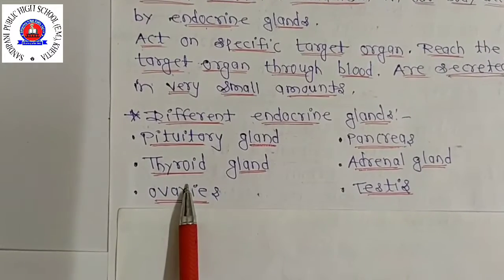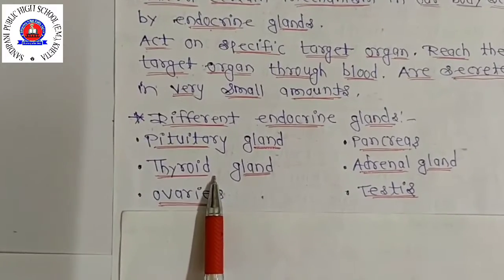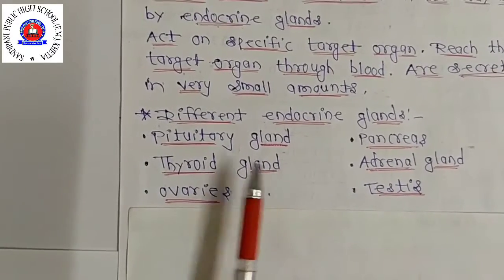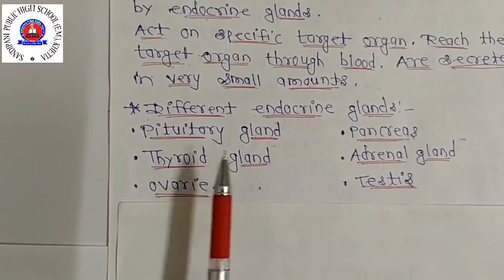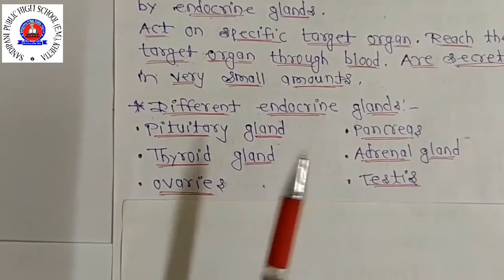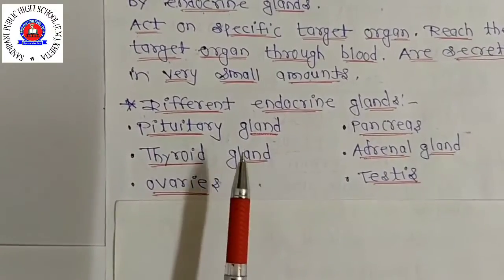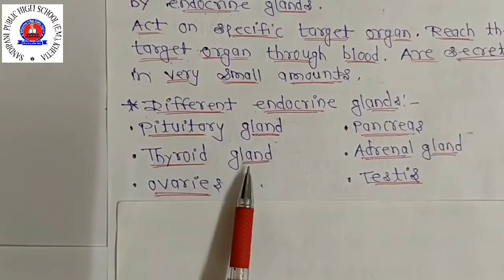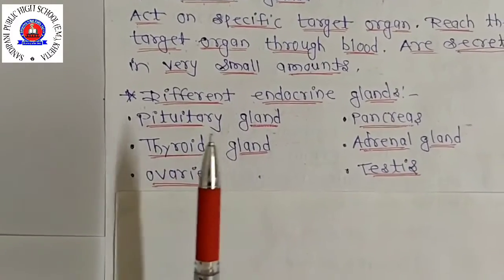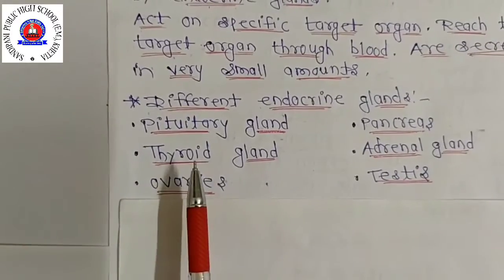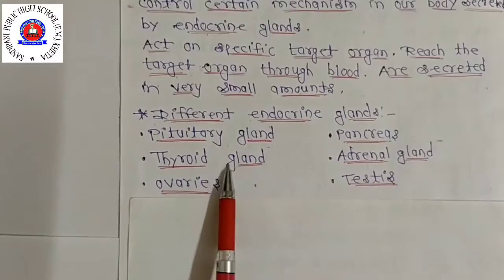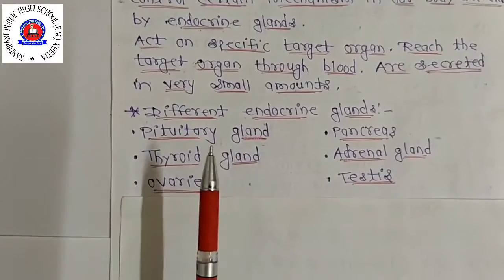The thyroid gland makes a hormone called thyroxine, which contains iodine. The function of thyroxine hormone is to control the rate of metabolism of carbohydrates, fats, and proteins in our body. Iodine is a necessary mineral for making thyroxine hormone, so a deficiency of iodine in the diet can cause a deficiency of thyroxine hormone in the body, producing less thyroxine and causing a disease known as goiter.